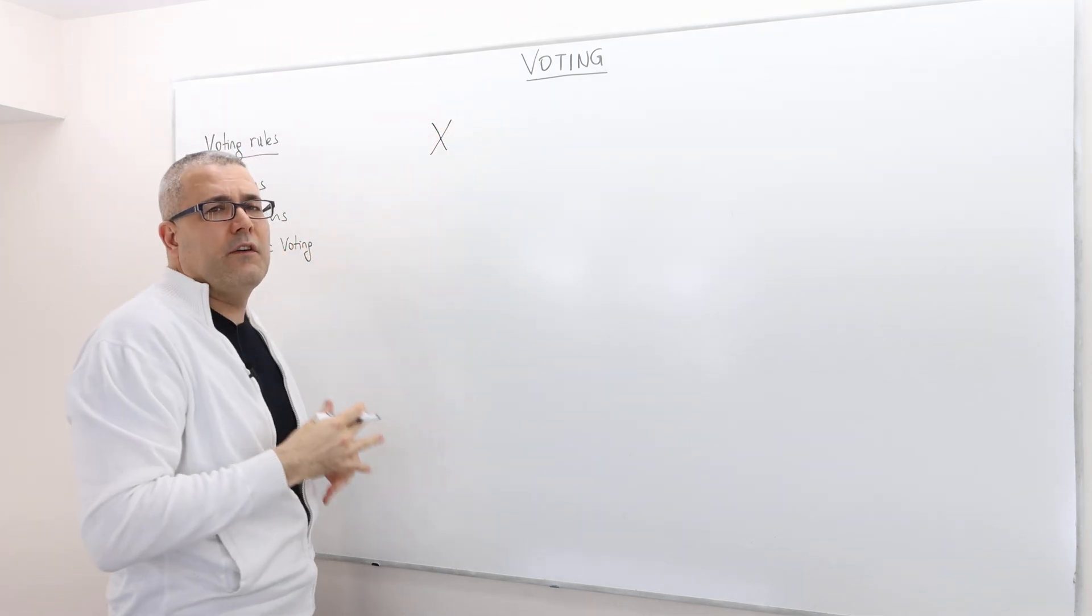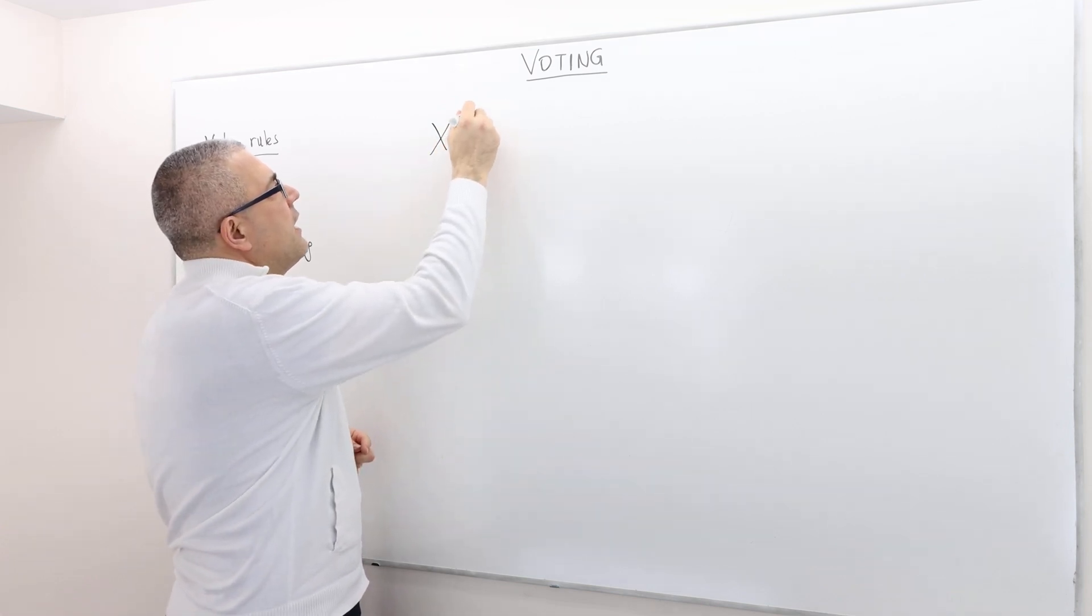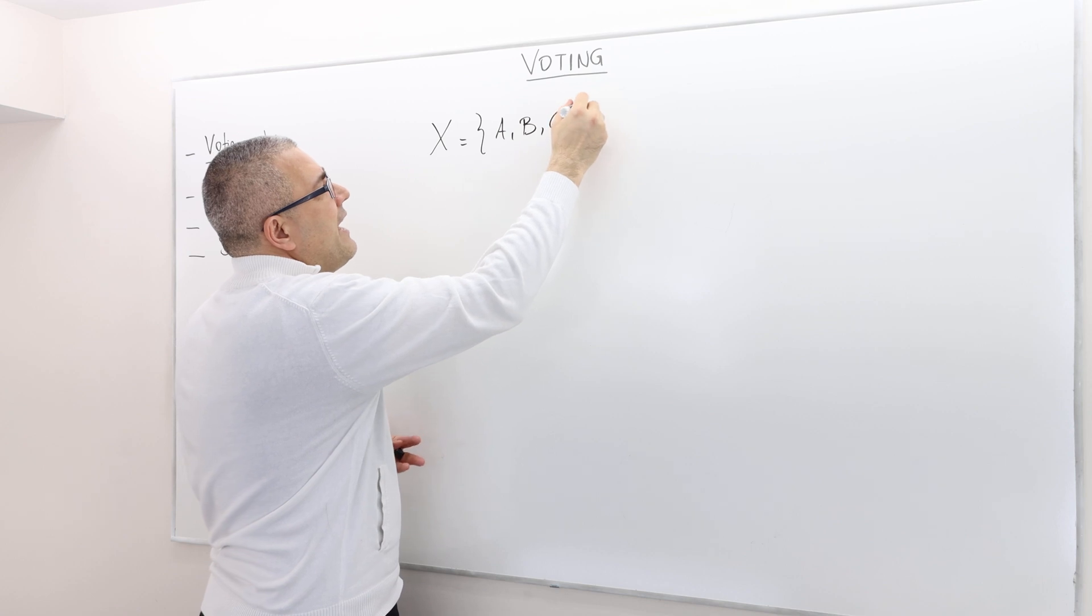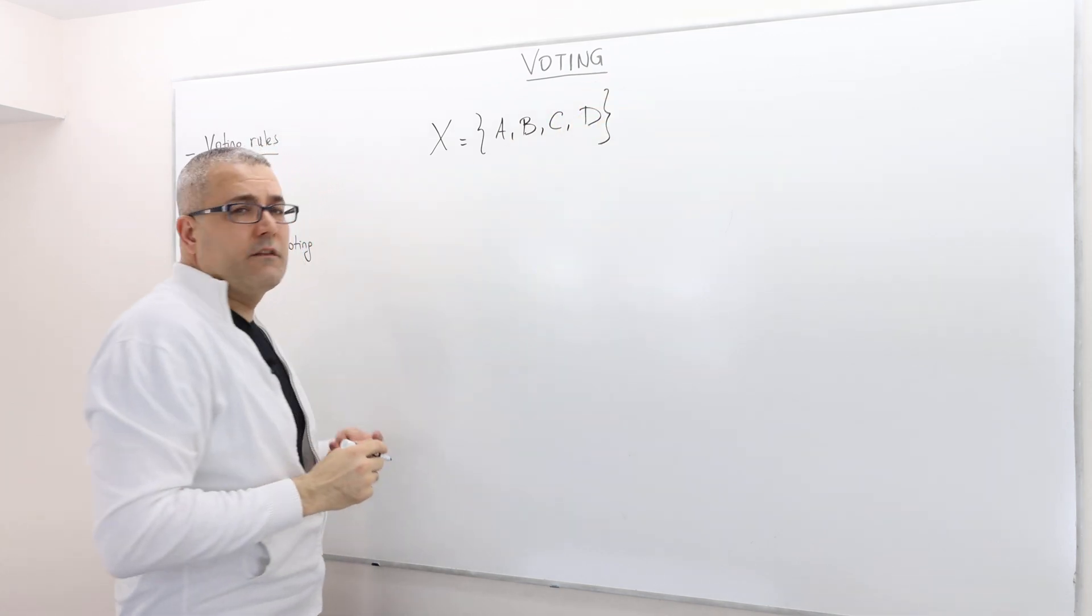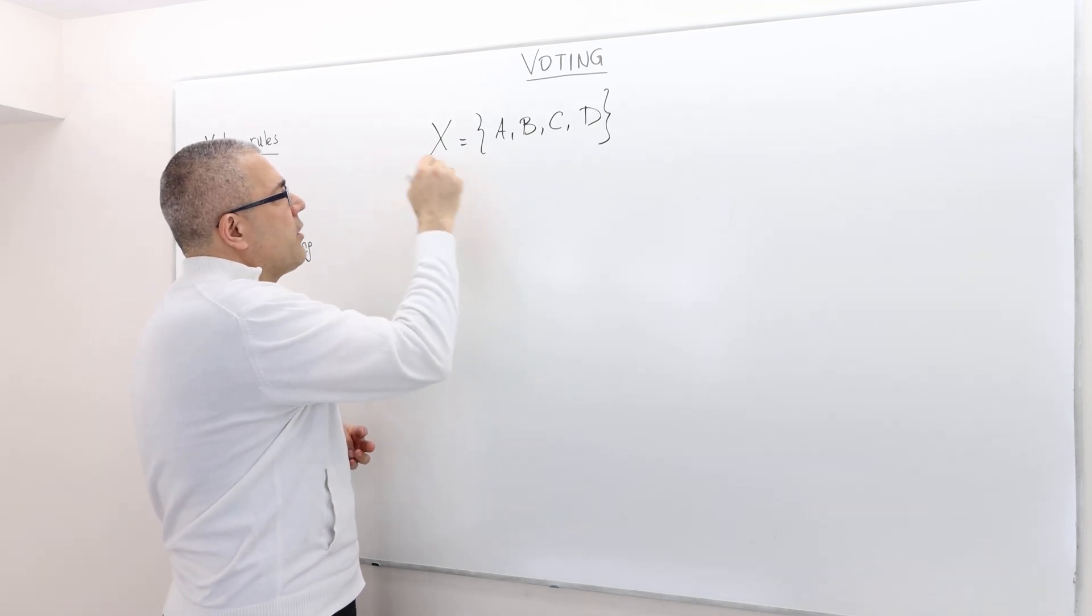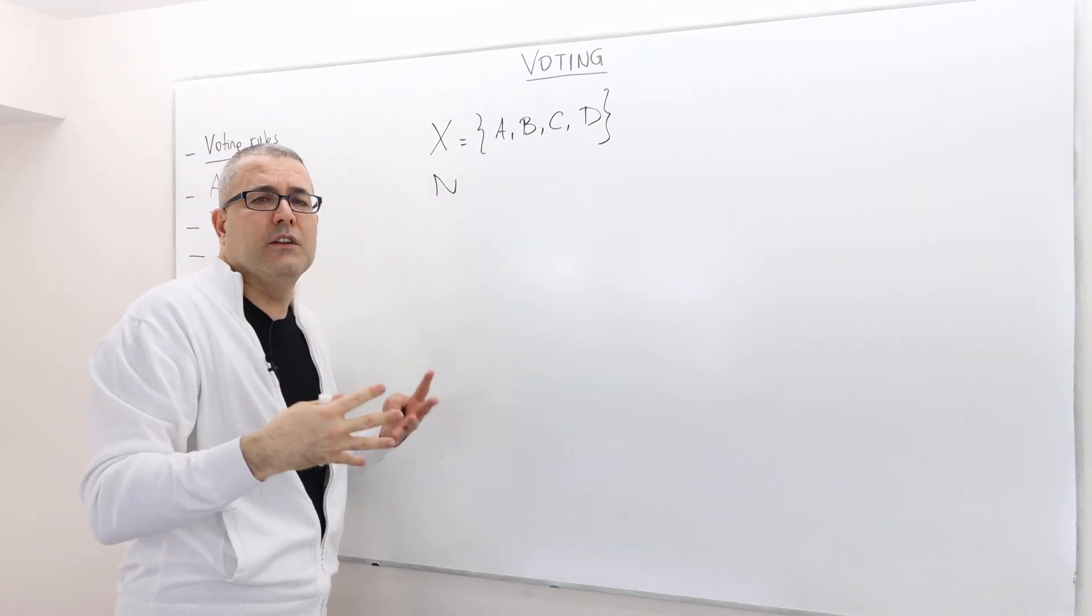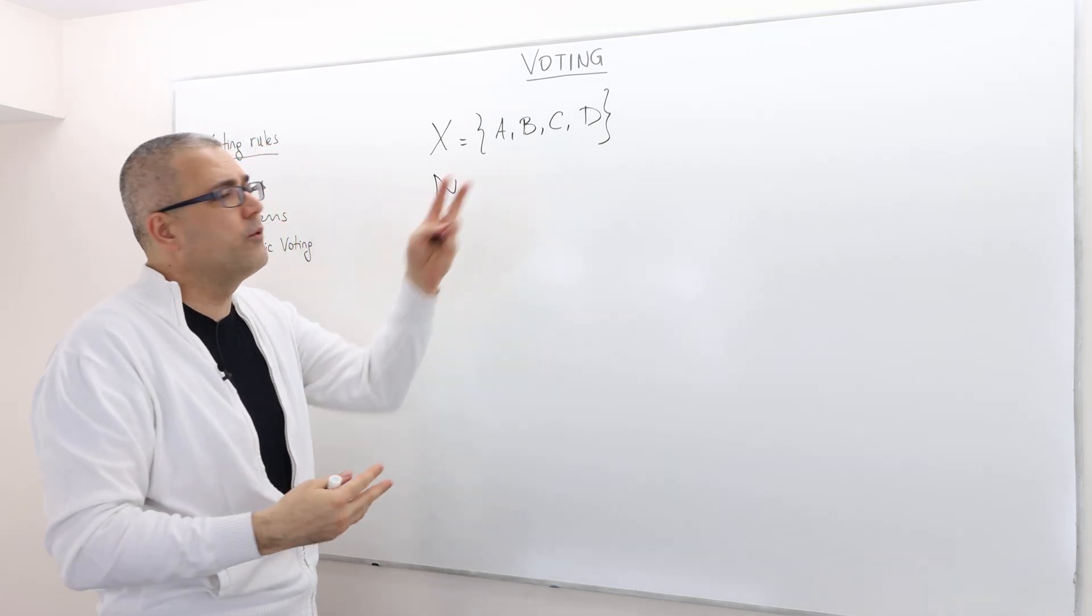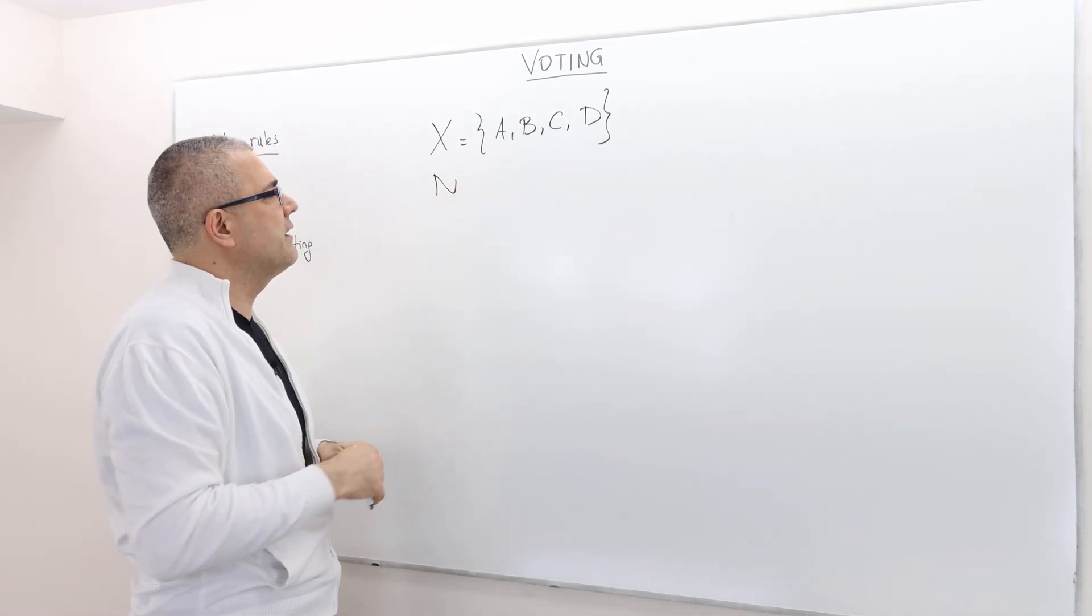Think of a set of alternatives X. There are some alternatives, some candidates that the voters are supposed to choose. X denotes the set of alternatives, and for simplicity in my examples I'm going to assume that there are four candidates.